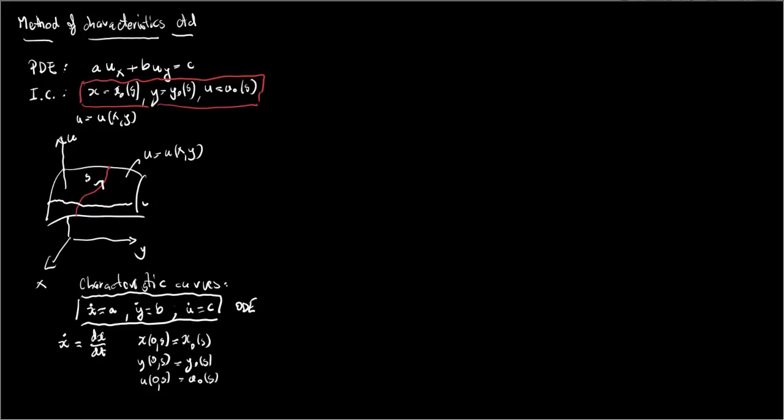Given a characteristic curve like the one here on this picture, like this one, we can consider its projection from X, Y, U space onto the X, Y plane. Such lines are called characteristics.